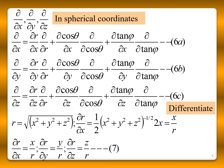We know R = √(X² + Y² + Z²), so ∂R/∂x = (1/2)(X² + Y² + Z²)^(−1/2) · 2X = X/R. Similarly, ∂R/∂y = Y/R and ∂R/∂z = Z/R.